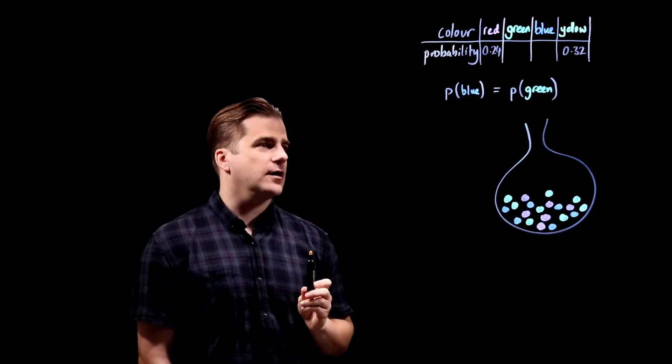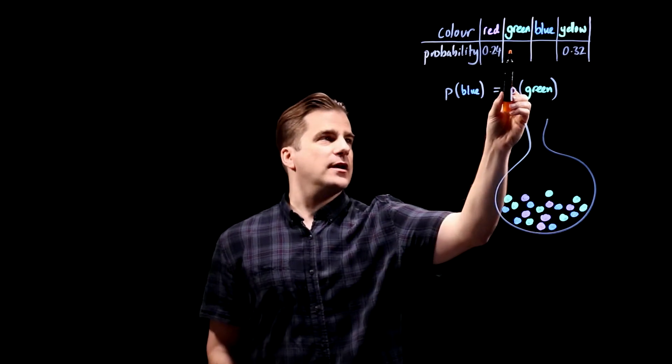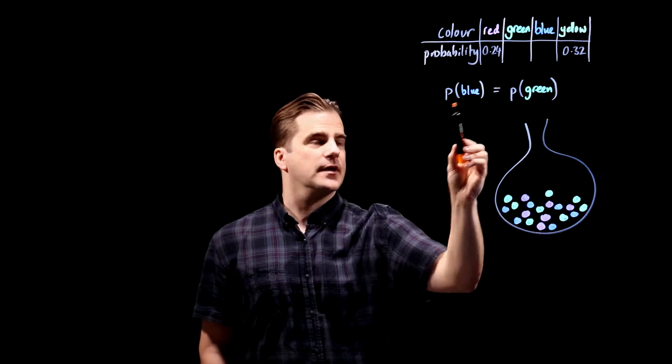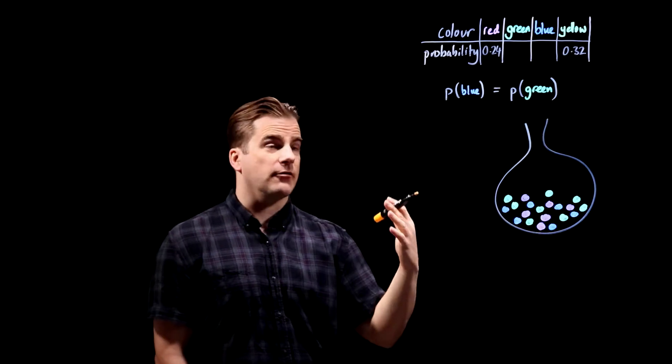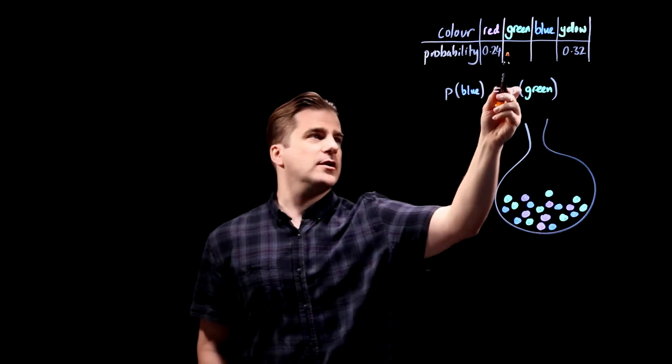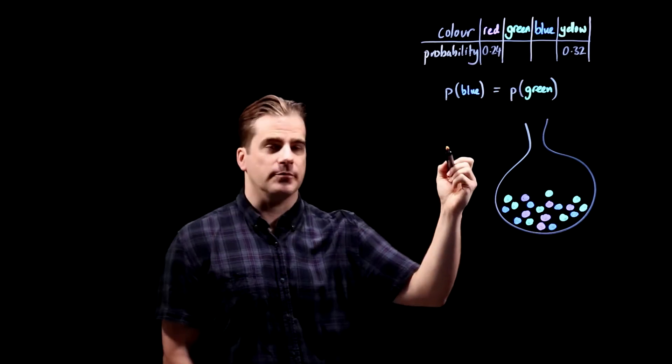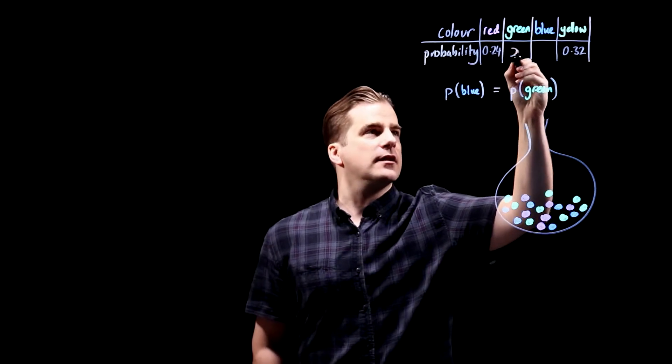Okay, so we're told that that value is the same as that value so we have to introduce our own variable. What are we going to call the probability of choosing a green or blue? Guess what, let's call it x.